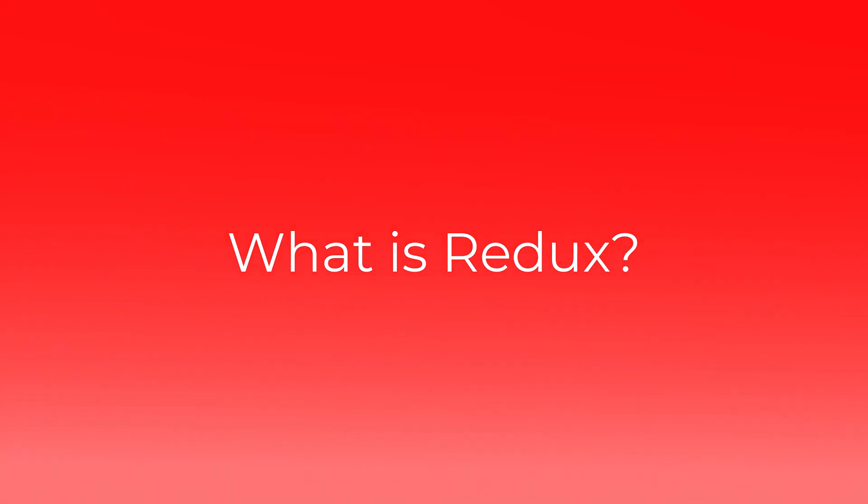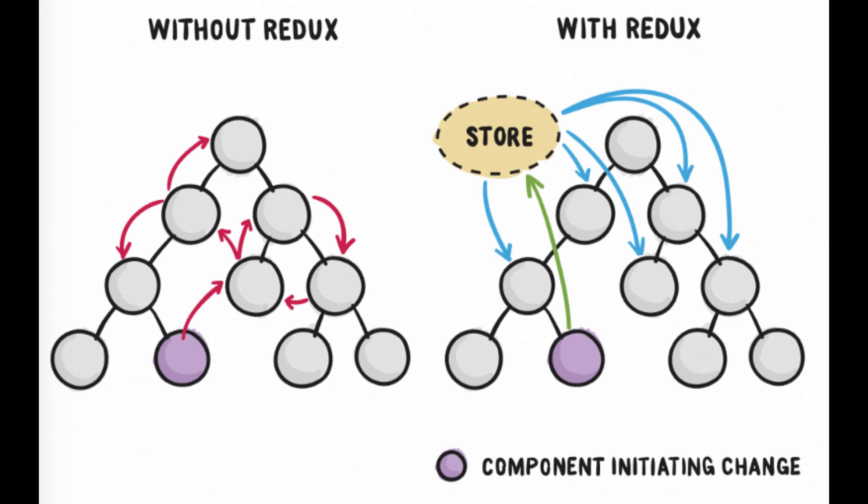Just think of it like this: we maintain data in a component using useState. Instead of maintaining data in useState, we can have it in the Redux store. This is helpful for sharing data across various components in the application. When data is in the useState of a component, it can only be accessed by that component or its child components via props. If we want to access that data in other components which are not child components, it's not possible. To achieve this, we maintain data in a Redux store, which can be accessed across all components throughout the application.